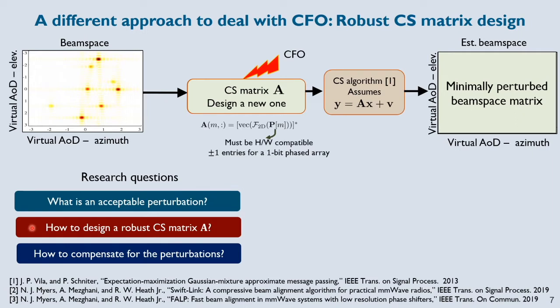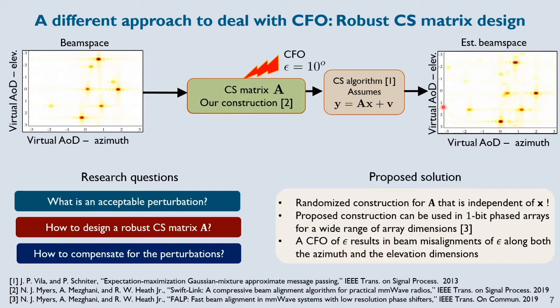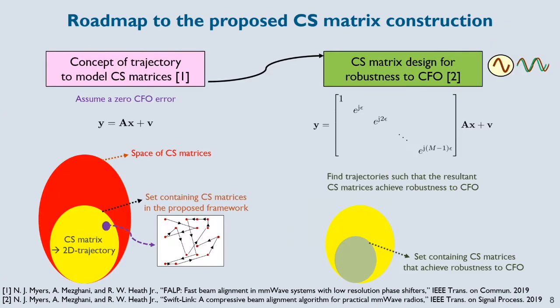The design of sensing matrix A is really a challenging problem because every row of A must satisfy hardware constraints — it must be expressible as a Fourier transform of a phase shift matrix P. In SwiftLink, we solve this problem by proposing a new construction for the compressive sensing matrix A. I will go over this construction in two stages: first, I'll introduce a new concept of two-dimensional trajectory useful in modeling compressive sensing matrices; then, I'll show how restricting randomness in these trajectories leads to a new class of CS matrices that achieve robustness to CFO.